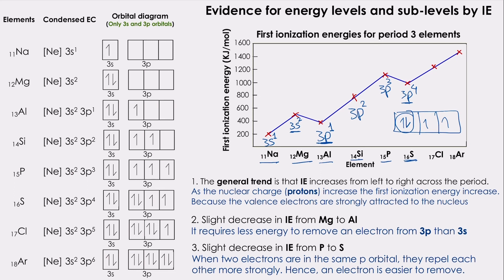Then as we go to Cl, we have 3P5, and then Ar with 3P6. As you can see, this trend is already reflecting the sub-shells for the elements in period 3.